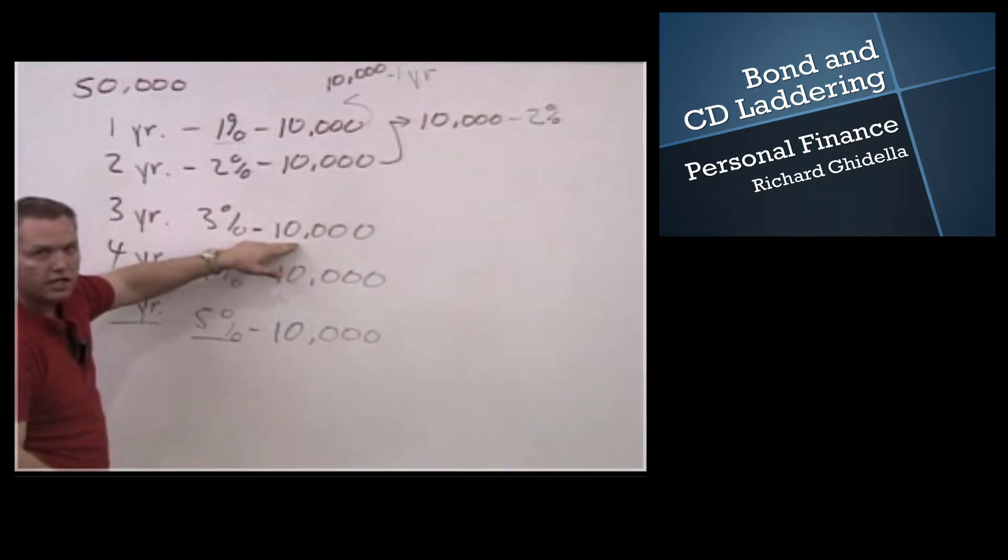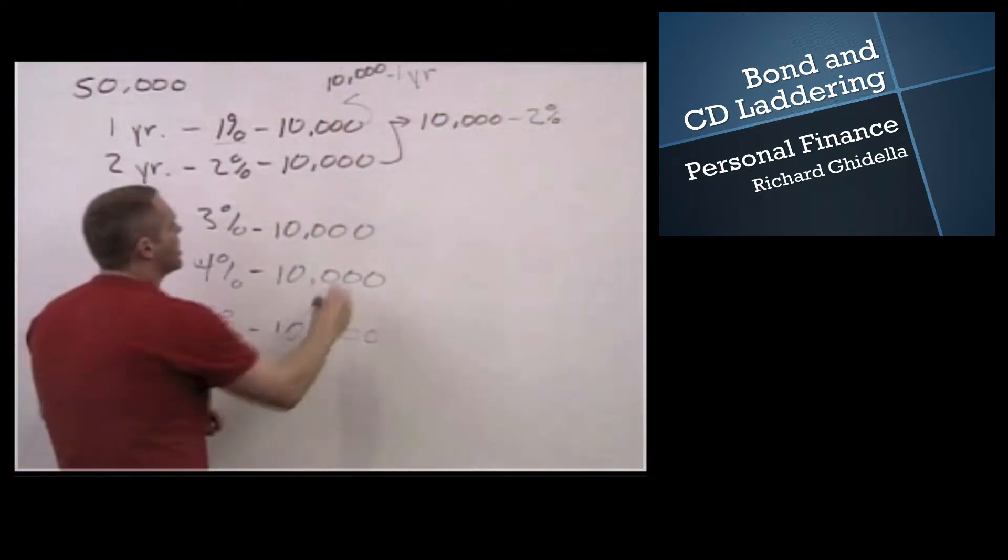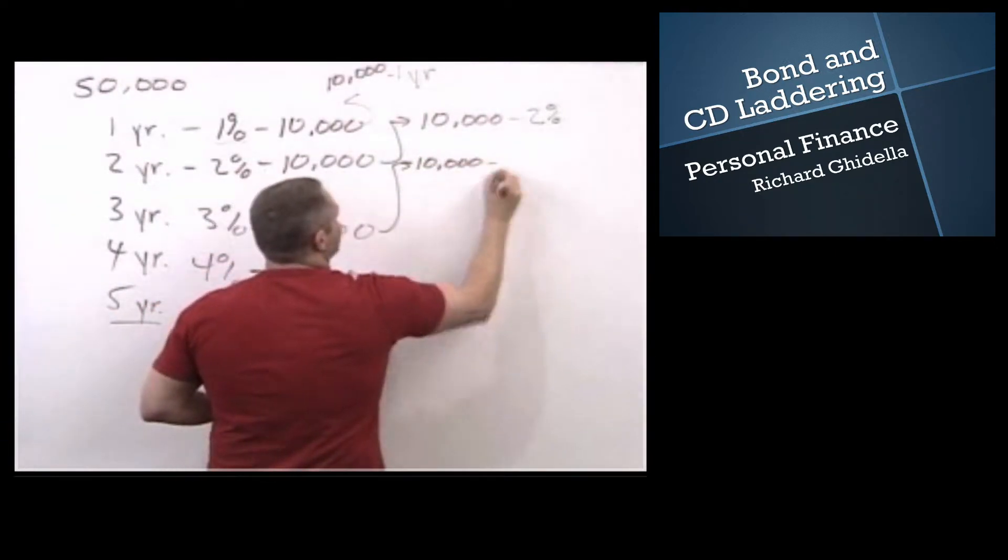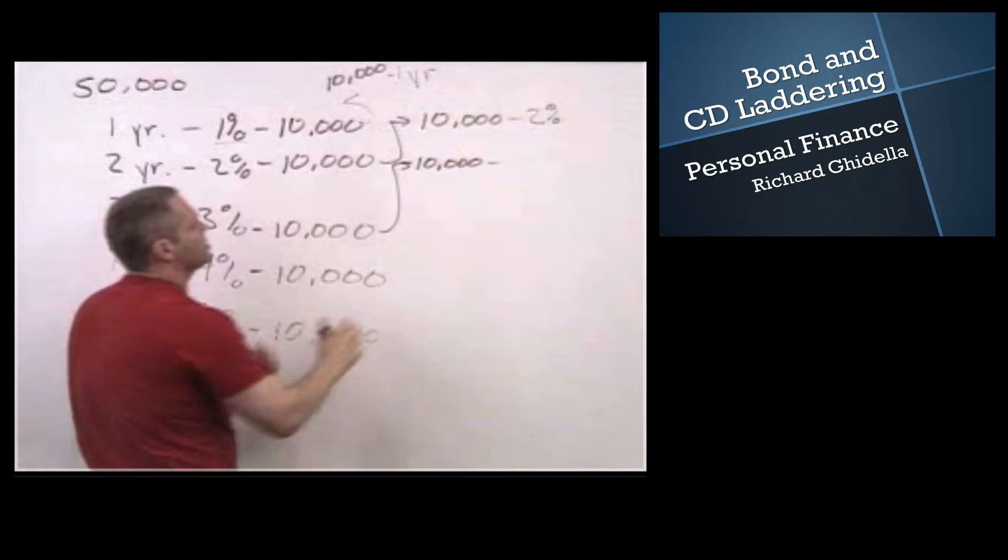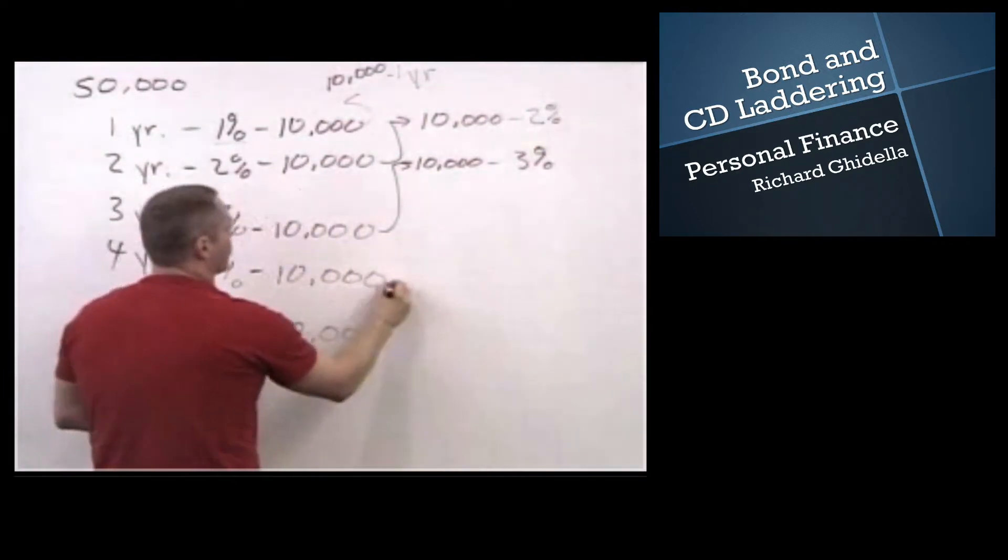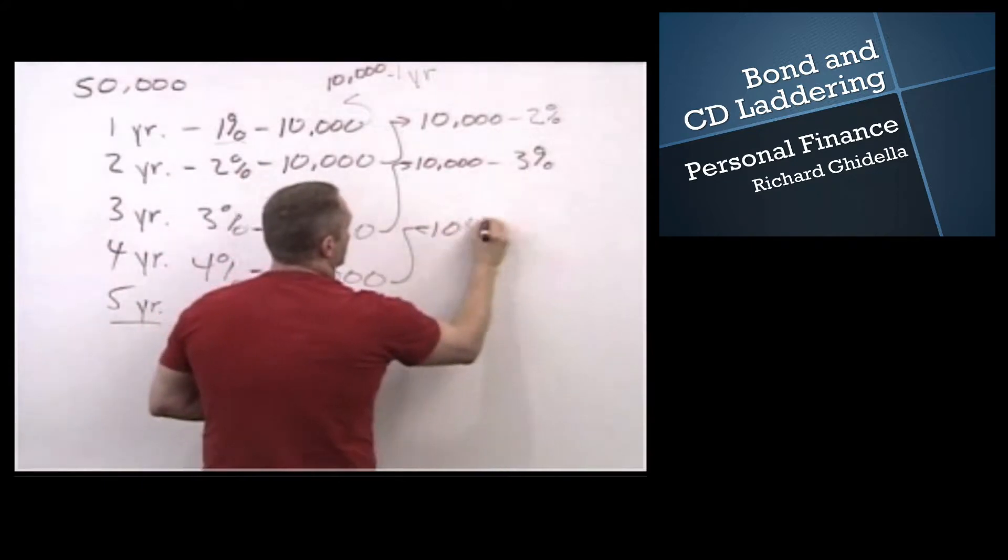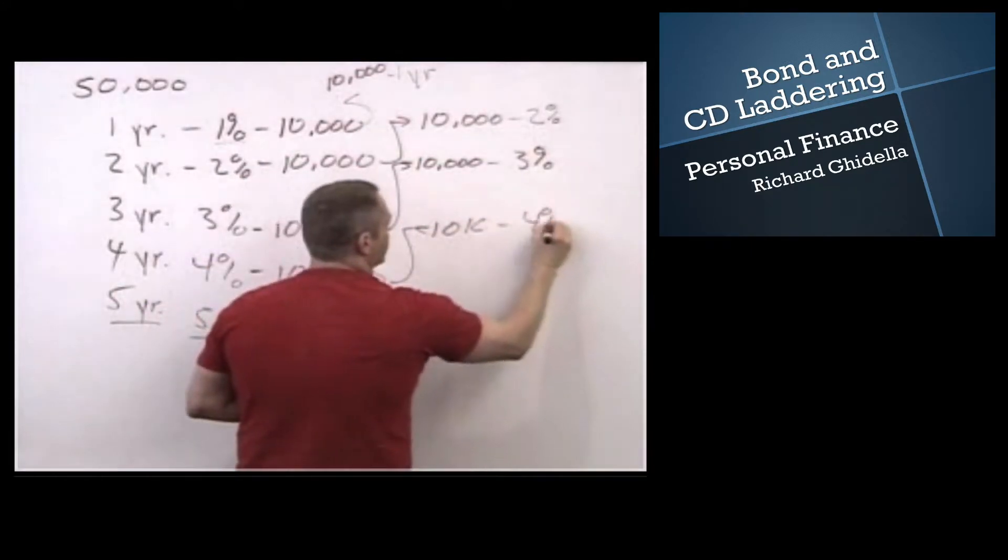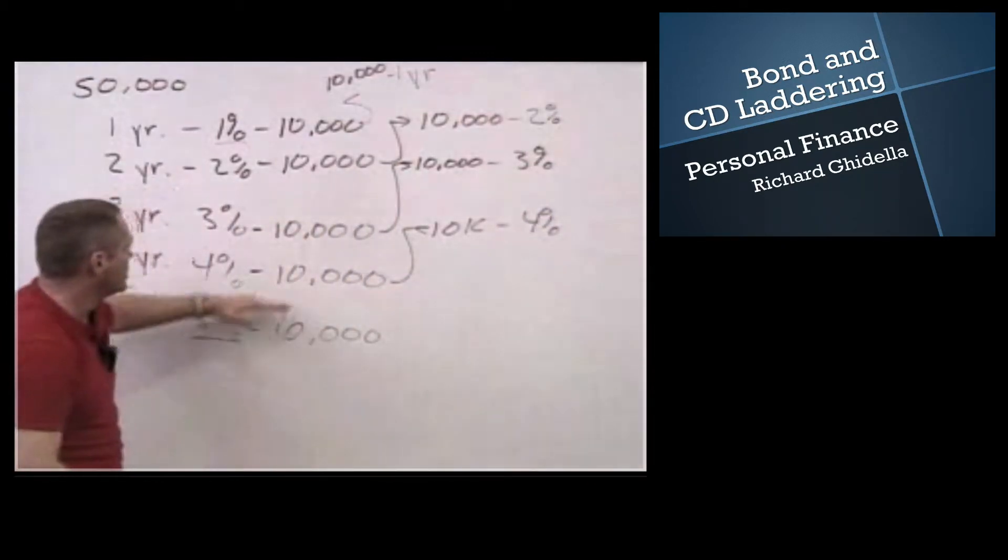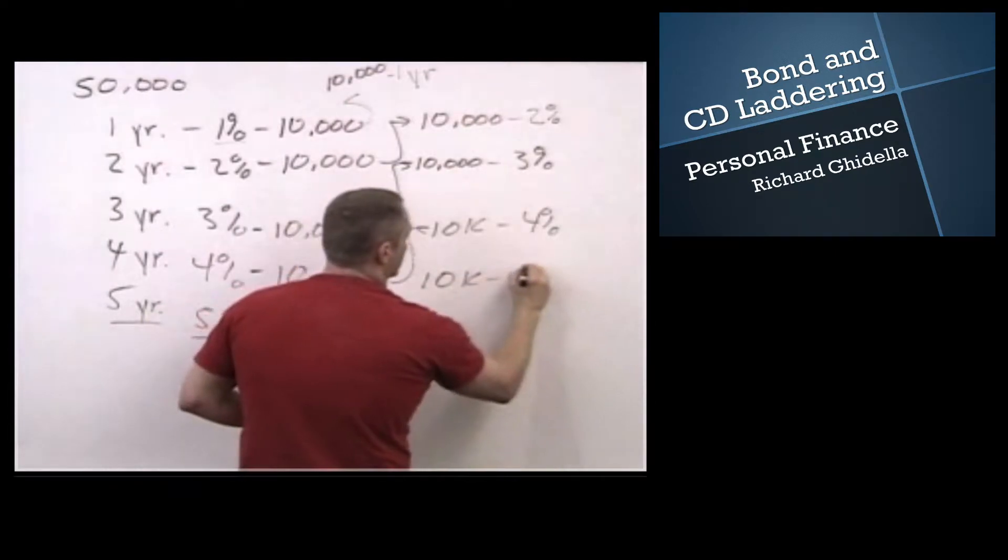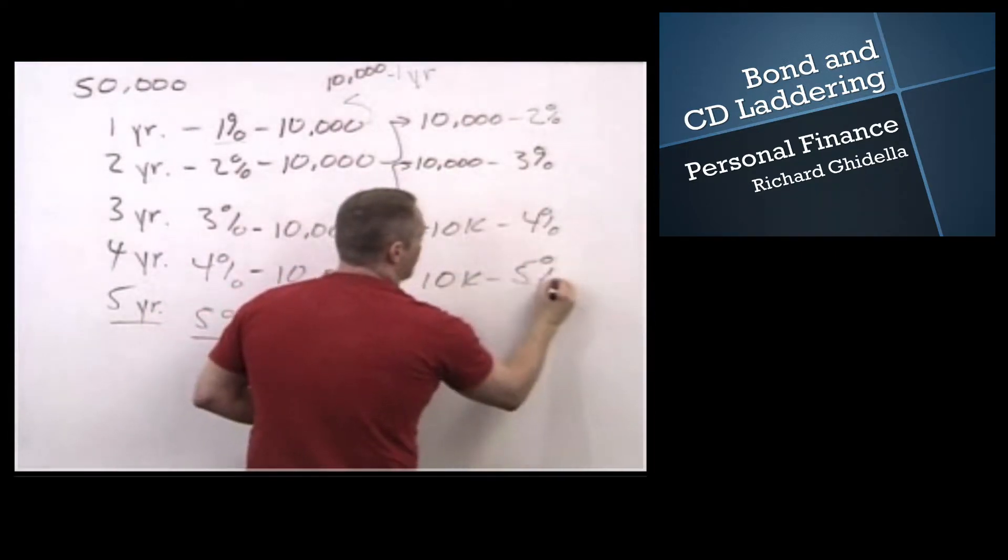My three year CD that's a year old, has two years to go, it acts basically the exact same as a two year CD, but it's yielding 3%. My four year CD has three years to go, that yields 4%. My five year CD that's a year old has four years to go and it yields 5%.